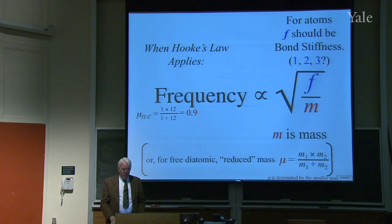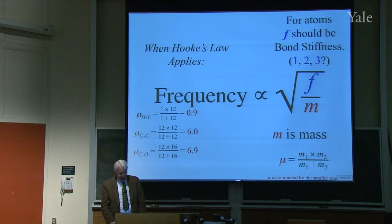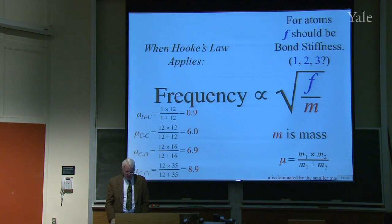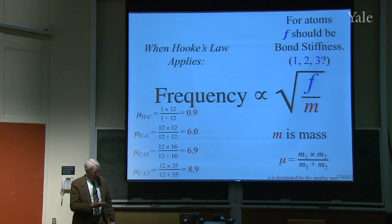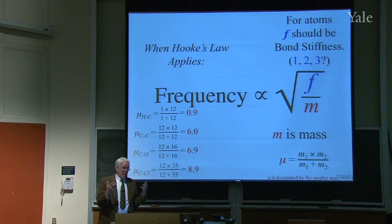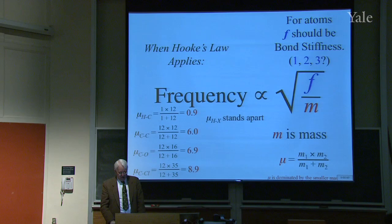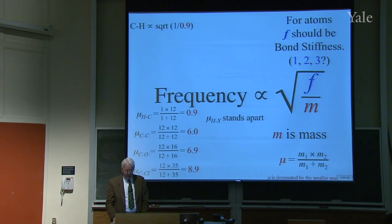For hydrogen and carbon vibrating together, the reduced mass is (1×12)/(1+12) ≈ 0.9 — almost 1. For C–C it's 6, for C–O it's 6.9, for C–Cl it's 8.9. So even as the partner atom gets heavier, the reduced mass doesn't change dramatically. This means that bonds involving hydrogen have very different frequencies from those not involving hydrogen, because the mass of hydrogen — 1 versus 6 or more — is so different.